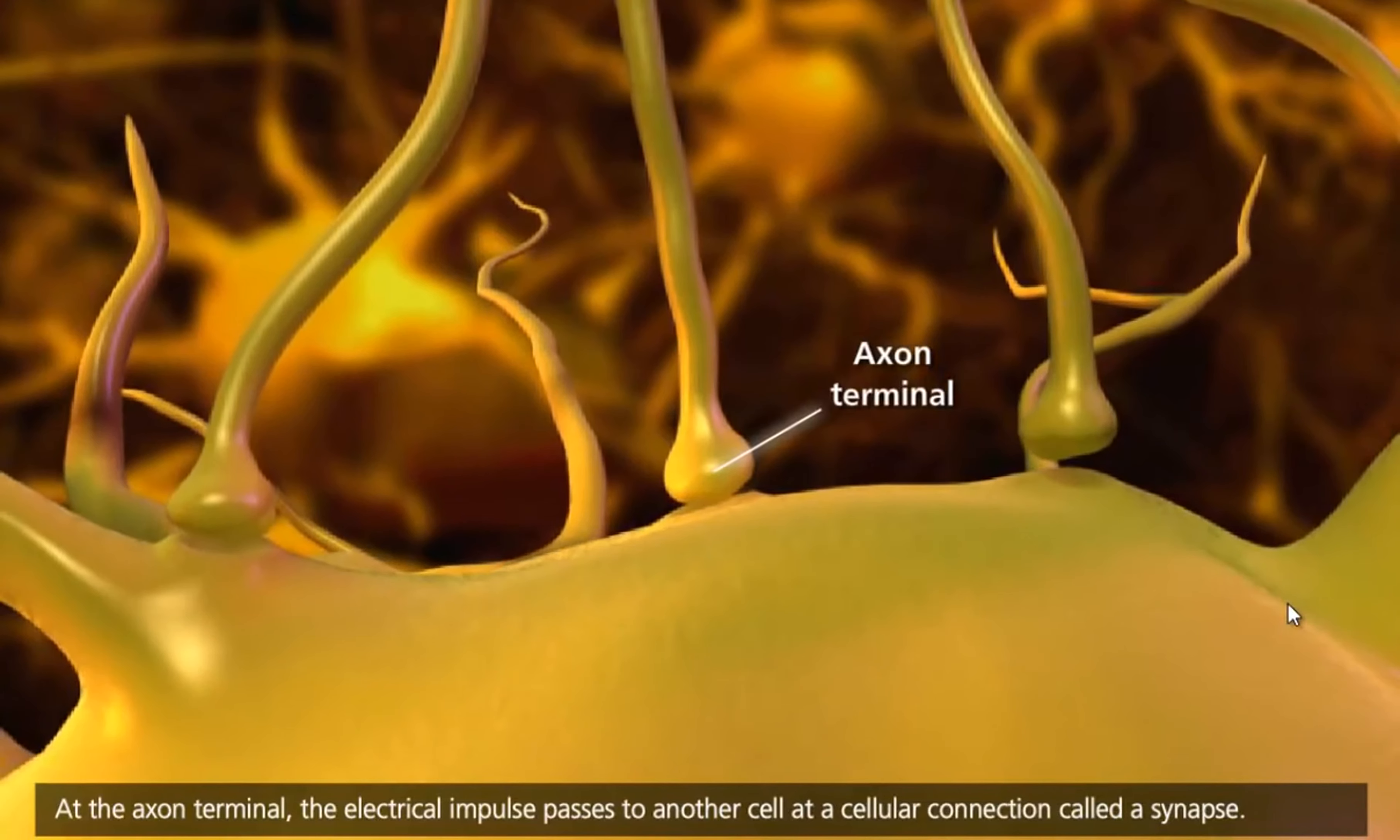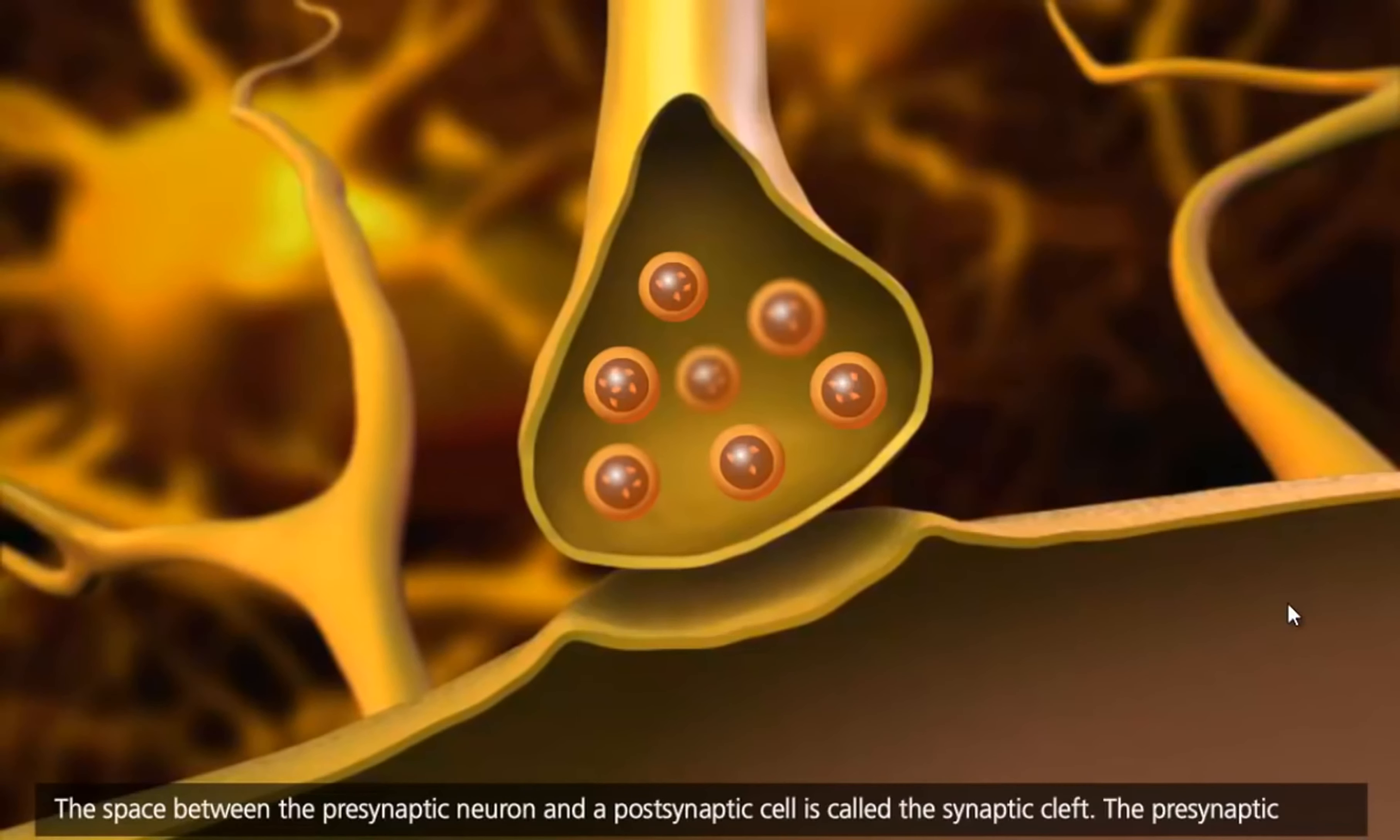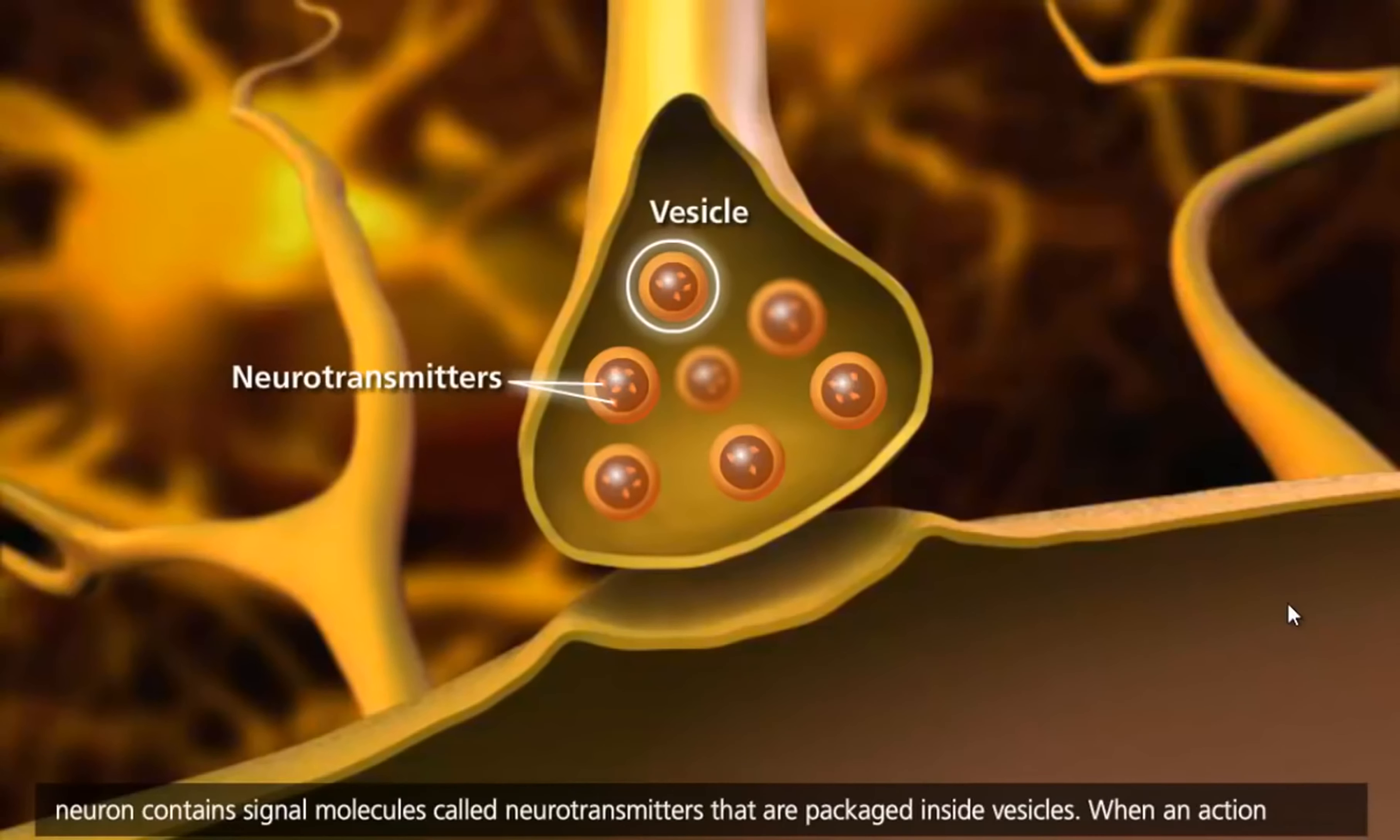At the axon terminal, the electrical impulse passes to another cell at a cellular connection called a synapse. The space between the presynaptic neuron and a postsynaptic cell is called the synaptic cleft. The presynaptic neuron contains signal molecules called neurotransmitters that are packaged inside vesicles.